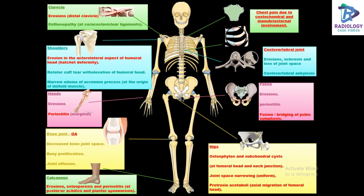Chest pain could be due to involvement of costochondral and manubriosternal joints. Costovertebral joints are also involved with erosions, sclerosis, and loss of joint space. In the pelvis, we see fusion and bridging of the pubic symphysis. The hips show osteophytes and subchondral cysts, predominantly at the femoral head and neck junction, uniform joint space narrowing, and protrusio acetabuli, which is the axial migration of the femoral head.